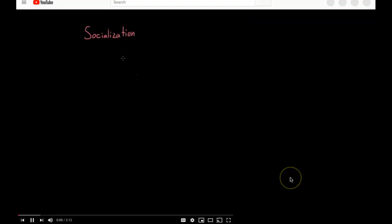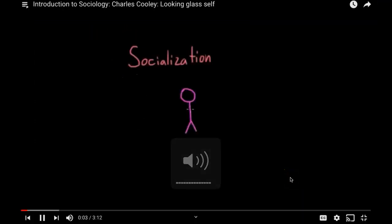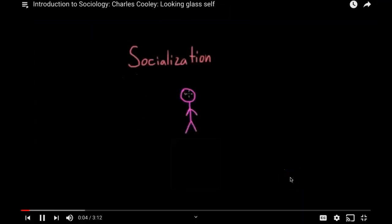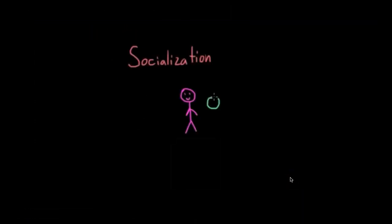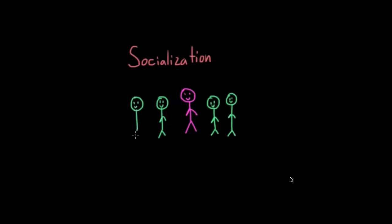Socialization describes the process by which people learn the attitudes, values, and behaviors that are appropriate and expected by their culture and community. It typically occurs through observation of and interaction with the people we are surrounded by — those who are close to us, like our family, friends, and teachers.